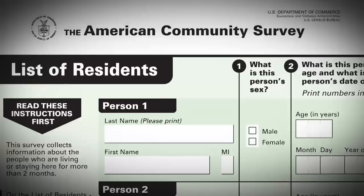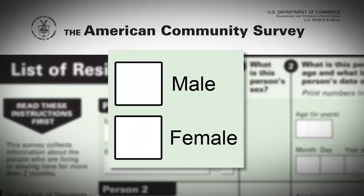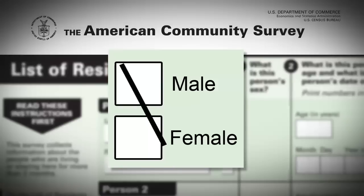The Census Bureau takes this into account as we process responses and design our surveys. We learned from the 2007 American Community Survey that when boxes were placed in certain positions, respondents or door-to-door census takers may accidentally mismark their gender because the eye is not registering all that is on the page. Additionally, a mere extension of a marked line may result in an erroneous response.